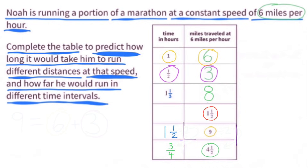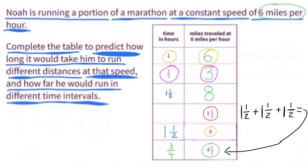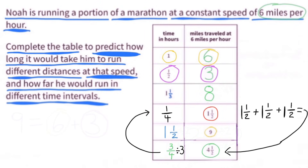1 and 1 half miles traveled at 6 miles per hour is 3 times less than 4 and 1 half miles traveled at 6 miles per hour, because 1 and 1 half plus 1 and 1 half plus 1 and 1 half equals 4 and 1 half. We can divide 4 and 1 half by 3 to get 1 and 1 half, and we'd have to divide 3 fourths by 3 to get 1 fourth. So at 1 and 1 half miles traveled at 6 miles per hour, it would have taken him 1 fourth of an hour.